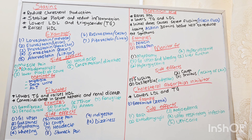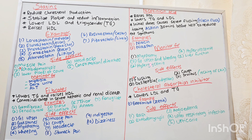Let's discuss nicotinic acid. It raises HDL and lowers triglycerides and LDL. The initial dose causes facial flushing, which is called niacin flush. It's important to take aspirin 30 minutes before taking this medication to help reduce the symptoms. Examples are niacin and Niaspan. Monitor for myopathy, GI upset and bleeding, hyperglycemia, hyperuricemia, and liver function. Side effects are flushing, dyspepsia — which is indigestion — cough, and pruritus, which is itching of the skin.